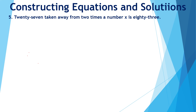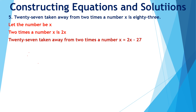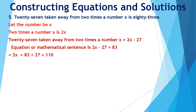27 taken away from 2 times the number x is 83. Let the number be x. 2 times the number is 2x. 2x minus 27 is equal to 83, because 27 taken away from 2 times the number x is 83. On solving this equation, we get x equal to 55. So the required number is 55.